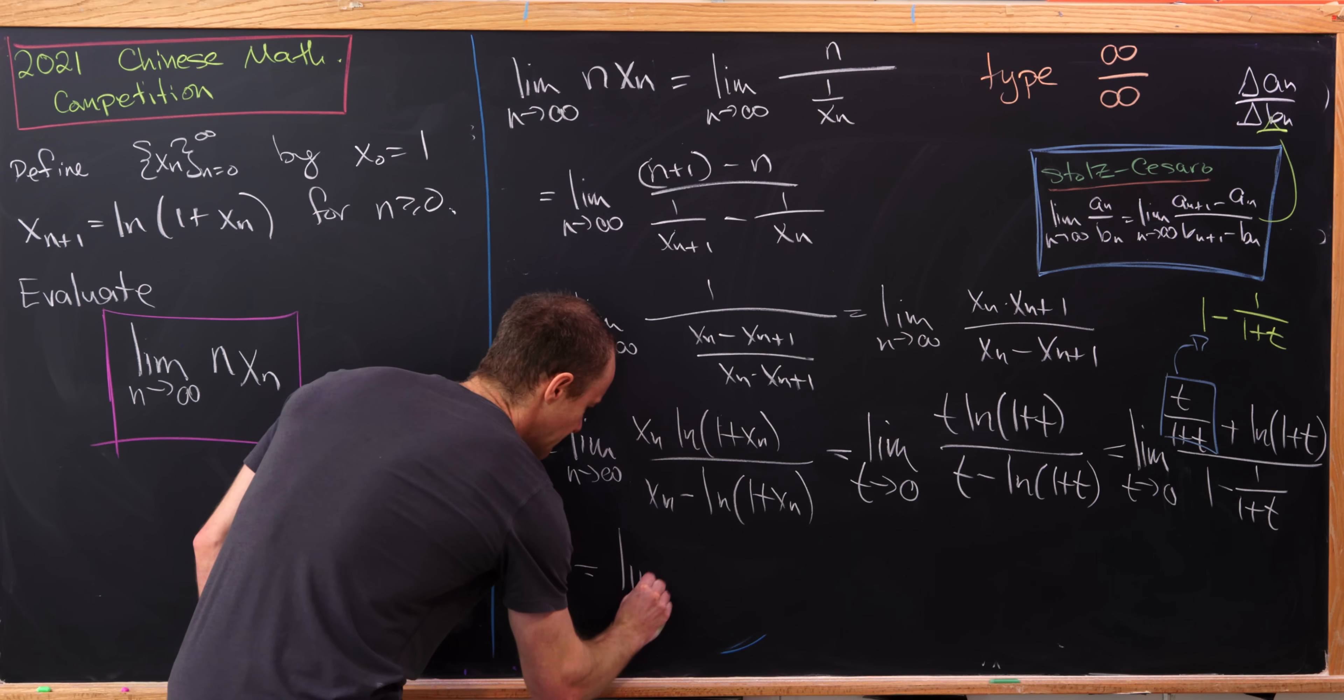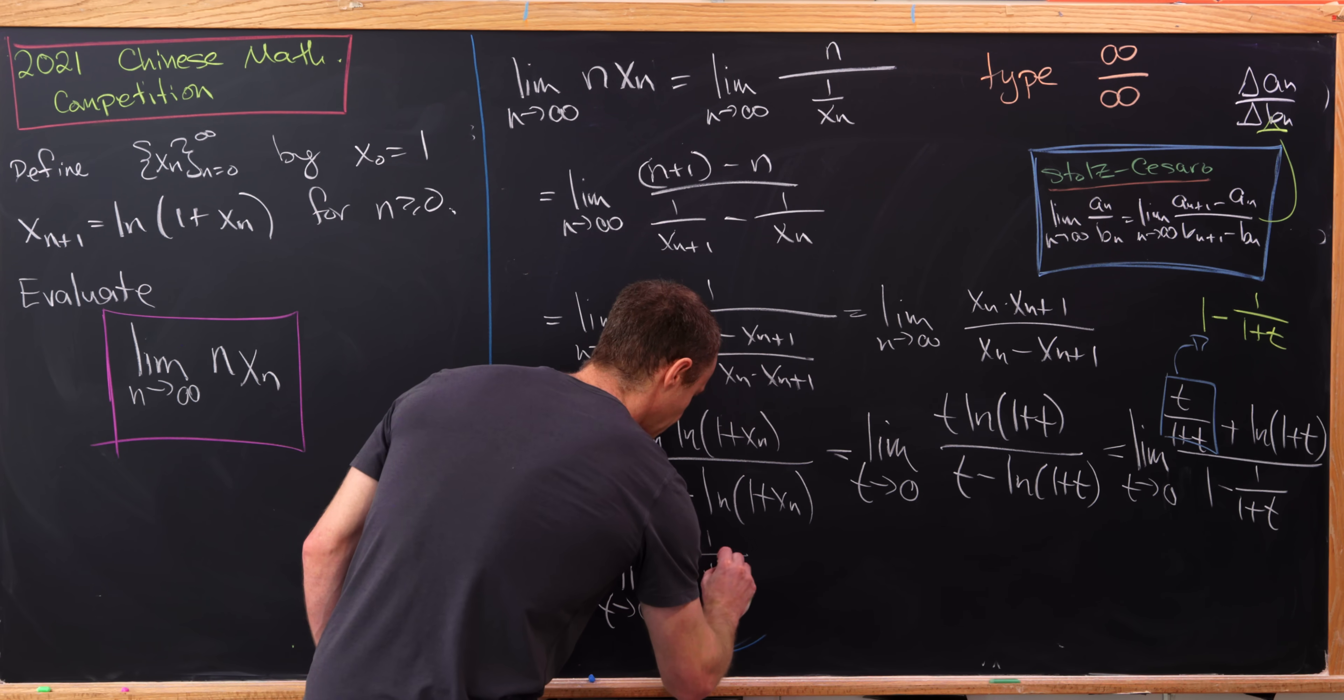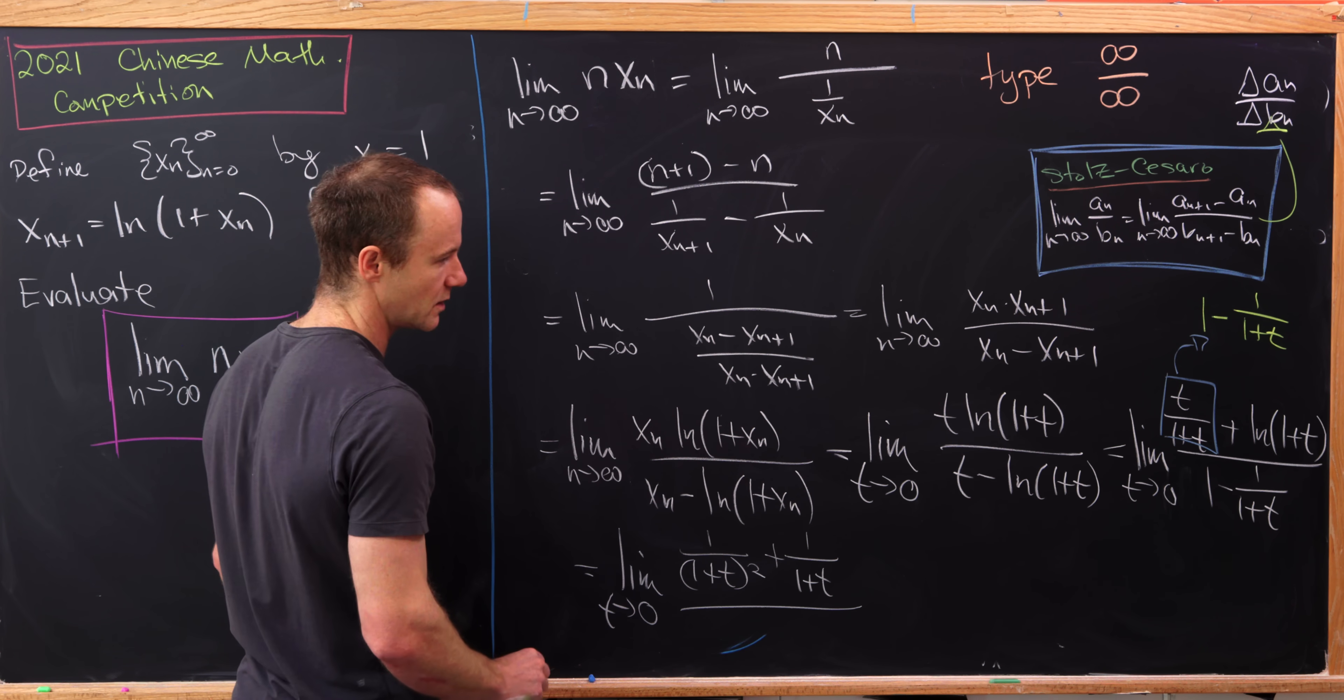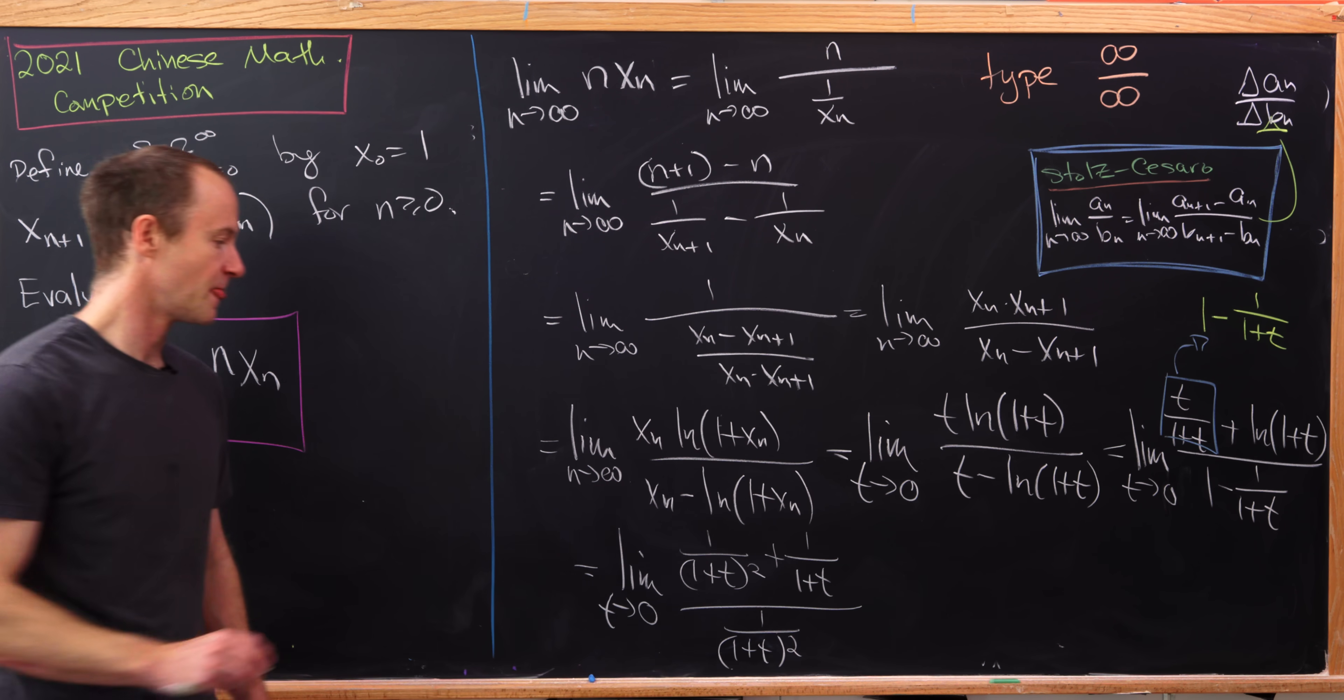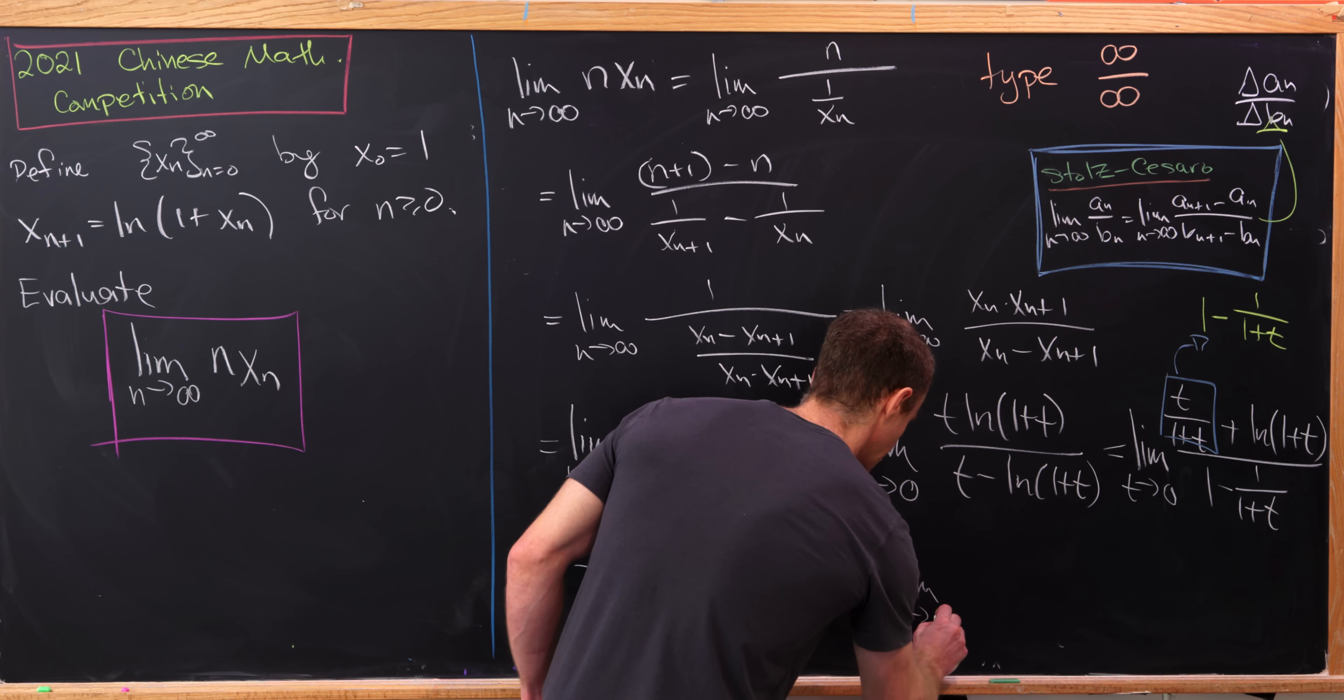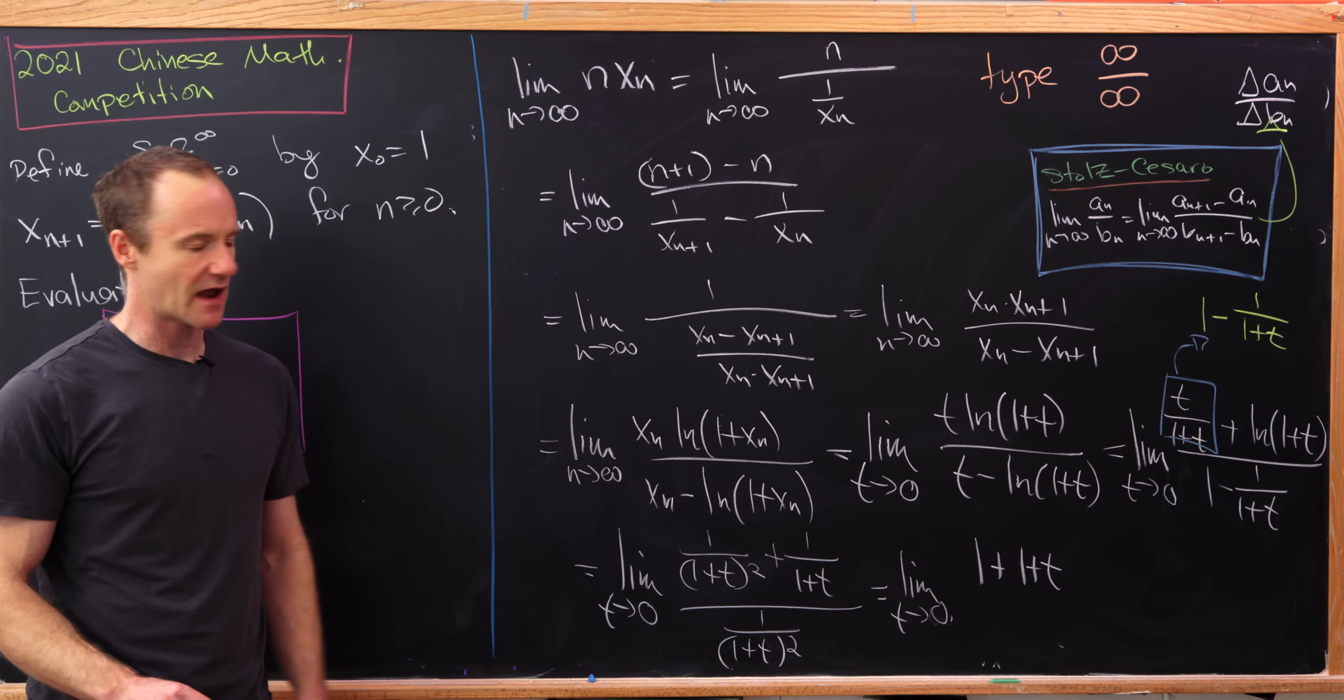So now using L'Hopital's rule one more time will give us the limit as t goes to 0 of 1 over (1 plus t) squared plus 1 over 1 plus t, all over 1 over (1 plus t) squared. But now we can multiply the numerator and denominator by (1 plus t) squared and we'll be left with the limit as t goes to 0 of 1 plus 1 plus t. So it's nice how that all cancels down.